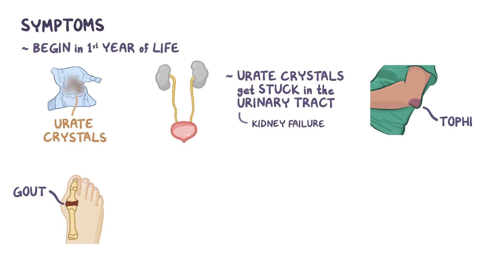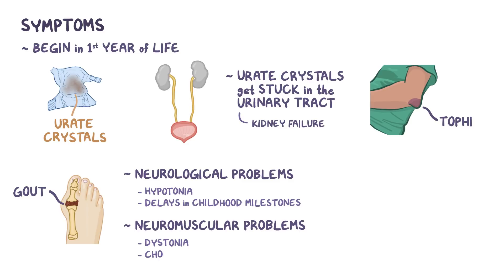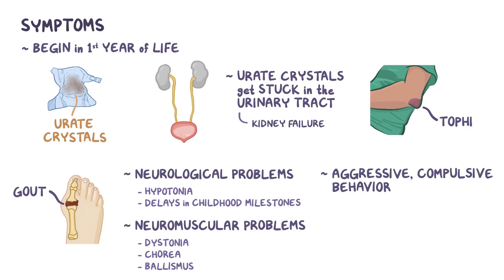Individuals with Lesch-Nyhan syndrome also have neurologic problems, like hypotonia or decreased muscle tone, and have a delay in reaching childhood milestones, like walking and talking. Neuromuscular problems are also common, like having involuntary muscle movements, dystonia, chorea — which is characterized by brief jerky movements — and ballismus, which is characterized by flinging of the limbs. Finally, these individuals usually have aggressive compulsive behavior, often resorting to self-injury, such as nail or finger biting and head banging.